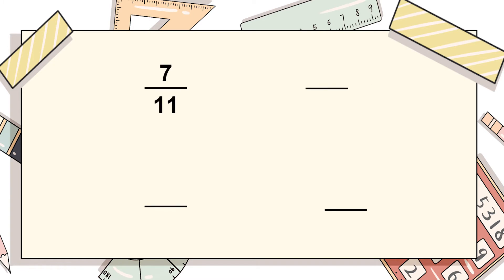Now let's do some practice problems. The first fraction is 7/11 and the next one is 5/11. Can we compare them? Yes. The denominators are the same, so we compare the numerators. Between 7 and 5, 7 is greater. Therefore the alligator sign opens towards the left and 7/11 is the larger fraction.